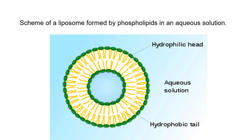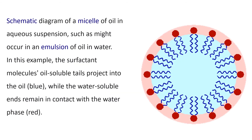Liposomes are small vesicles made up of one or more lipid bilayers. Most liposomes contain an aqueous core and are both hydrophilic and hydrophobic in nature. When phospholipids are mixed with water, they spontaneously rearrange themselves to form the lowest free energy configuration — the hydrophobic regions remove themselves from water while the hydrophilic regions interact with water. Another example of molecular assembly is an emulsion of oil in water, where the surfactant molecule's oil-soluble tail projects into the oil while the water-soluble end remains in contact with the water phase.